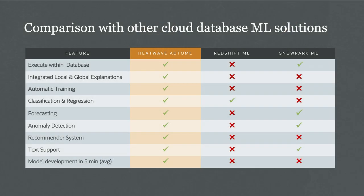HeatWave AutoML, compared to other vendors, offers no real comparison. It's built into the database and integrated with explanation. You get automatic tuning, classification, regression, anomaly detection, recommendations, and text processing. The same AutoML capability exists for both data ingested into MySQL HeatWave database files and data accessed through MySQL Lakehouse, so you get the same capabilities regardless of where the data lives.